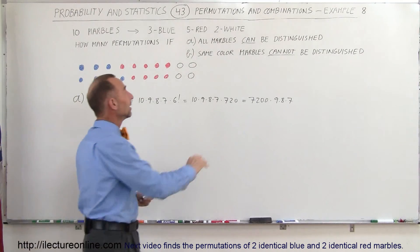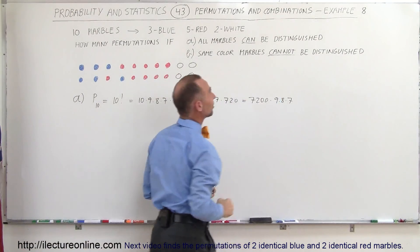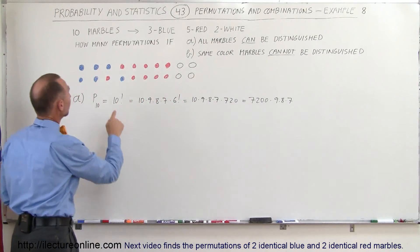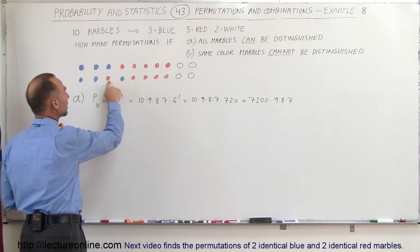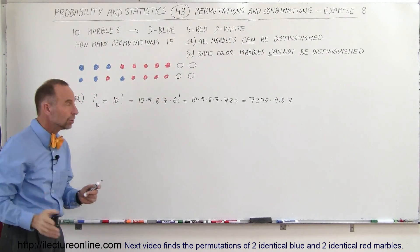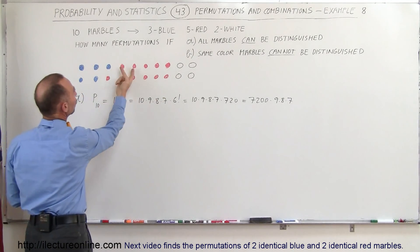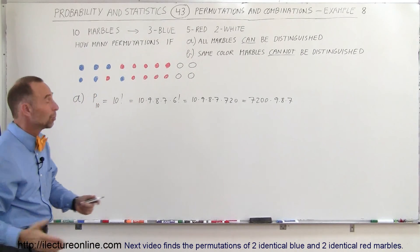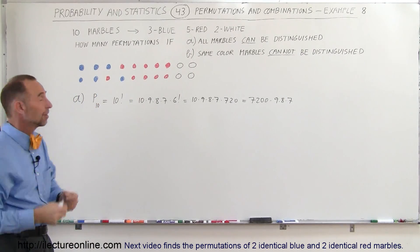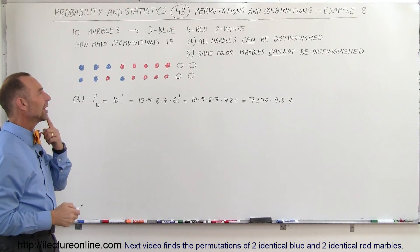But now the restriction says that the same color marbles cannot be distinguished. What that means is, for example, we can move a red one over, a blue one over here, and a red one over here, and that's a new permutation. However, if I change two red ones, if you cannot distinguish them, then that's the same permutation. So they're not different. How do we figure that out?